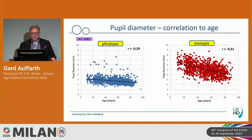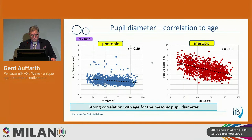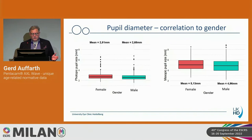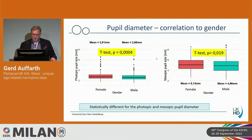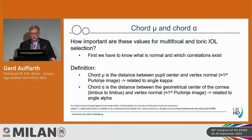Looking at pupil diameter — photopic and mesopic — correlated with age across 1,082 patients, there is a stronger correlation with mesopic pupil diameter. Pupil size goes down in the cataract group versus the refractive or presbyopia group. If you look between male and female, there is actually a significant difference for photopic and mesopic pupil diameter — a slight difference, but with this amount of data it is detectable.